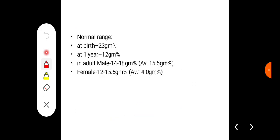The normal range of hemoglobin: at birth is around 23 gram percent, at the age of one year it is 12 gram percent. In adult males, it ranges between 14 to 18 gram percent with average of 15.5 gram percent. In females, it ranges between 12 to 15.5 gram percent with average around 14 gram percent.